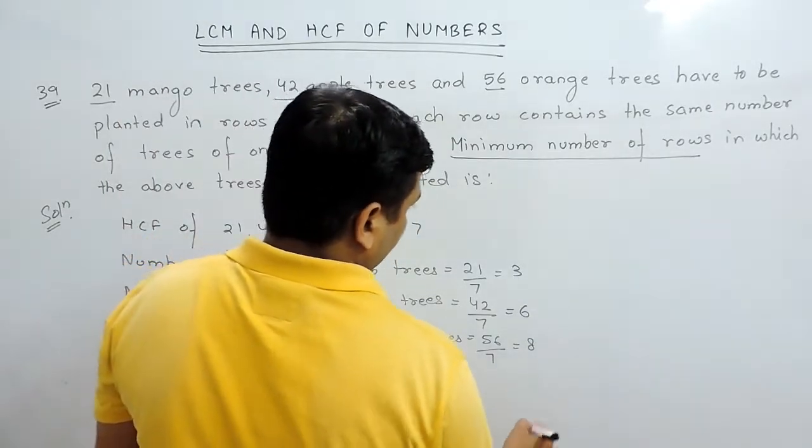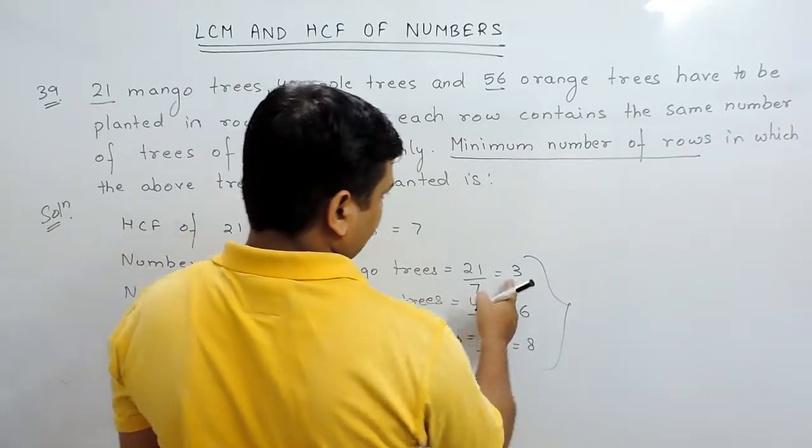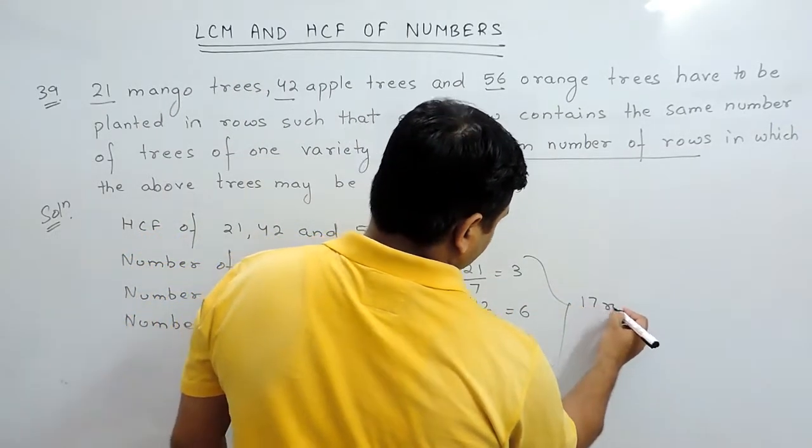Then the total number of rows are 8 plus 6 is 14 plus 3, that is 17 rows.